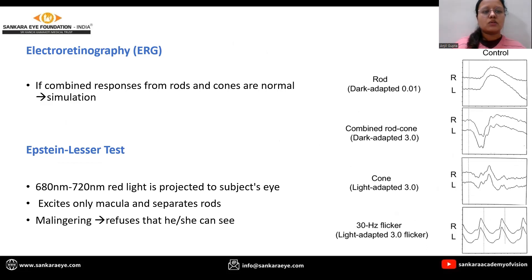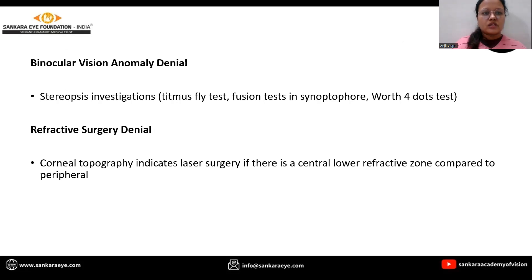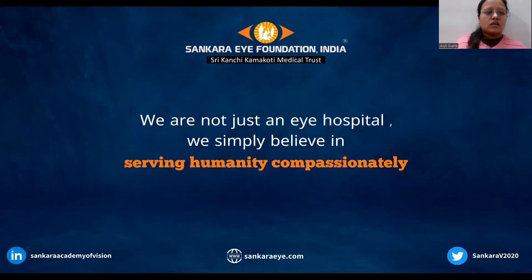The Eisner test: after dark adaptation, 680 to 720 nanometer red light is projected to the subject's eye. It excites only the macula's cone receptors, and a malingerer who is faking night blindness refuses to report seeing any light. Negative simulation disorders include denial of central vision anomaly, denial of perimetric changes, denial of night blindness, denial of binocular vision anomaly, and denial of refractive error. Thank you.